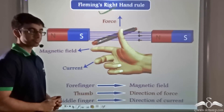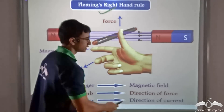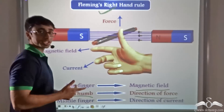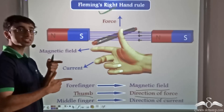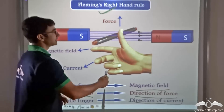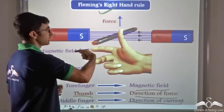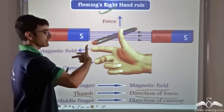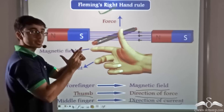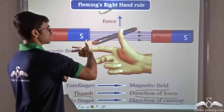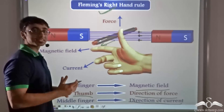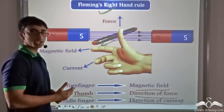Fleming's right hand rule states that if you stretch out your forefinger in the direction of the magnetic field, and stretch out your thumb in the direction of the force, then if you stretch out your middle finger perpendicular to both the thumb and the forefinger, that will give you the direction of current. Considering the image: the magnetic field is in one direction, the force is applied upward, and stretching the middle finger perpendicular to both gives the direction of the induced current. So using Fleming's right hand rule, we can determine the direction of induced current without an elaborate experimental setup.